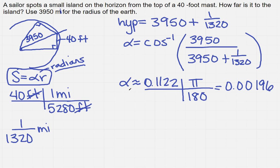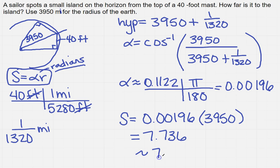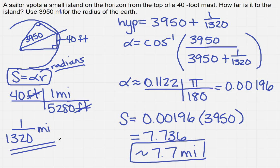We've got alpha and we know the radius, but we still need to find the arc length. S equals alpha times the radius. We just found alpha, and the radius — provided for the Earth — is 3,950. Doing the calculation on the calculator, I come up with 7.736, which is approximately 7.7 miles. Remember, it's in miles because we converted everything to miles at the beginning.